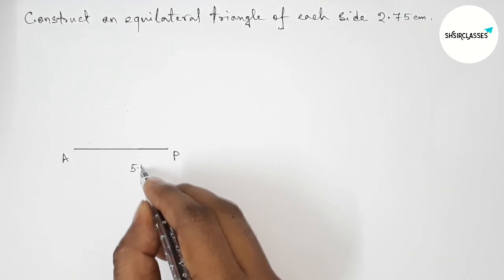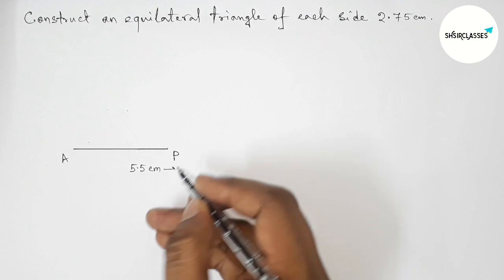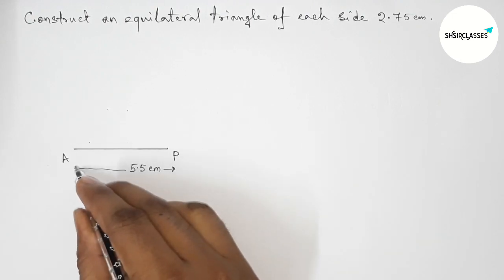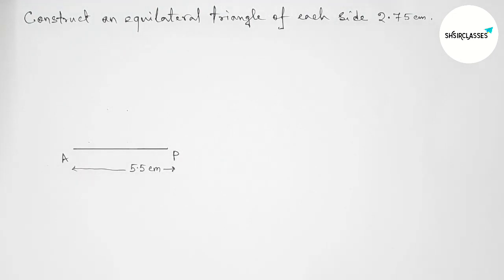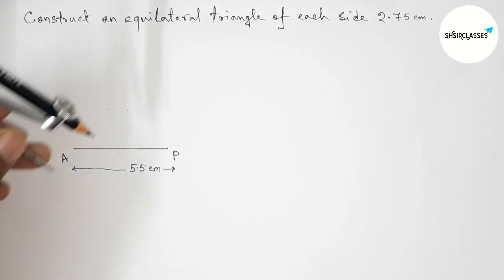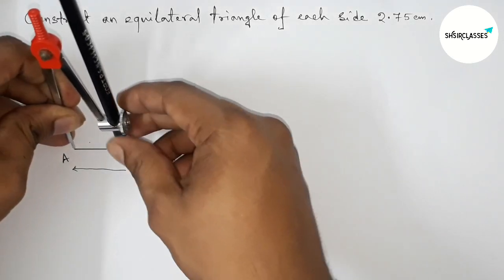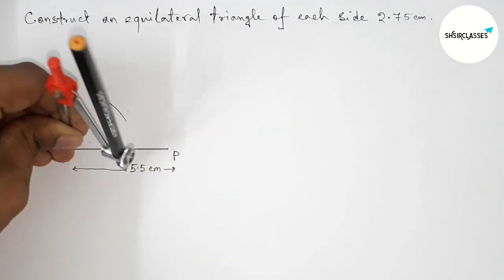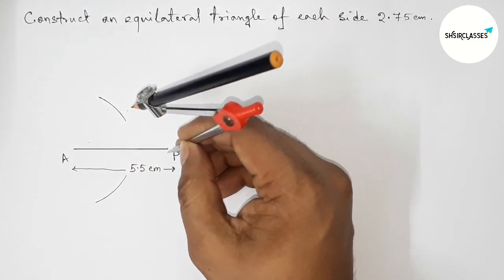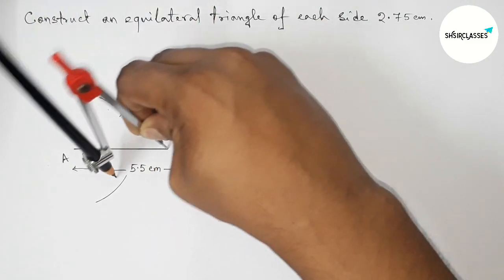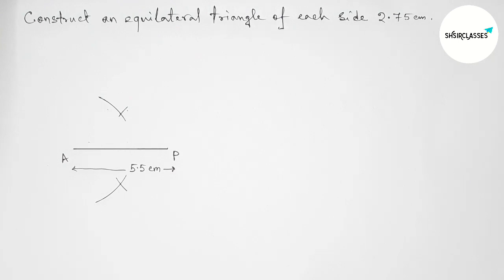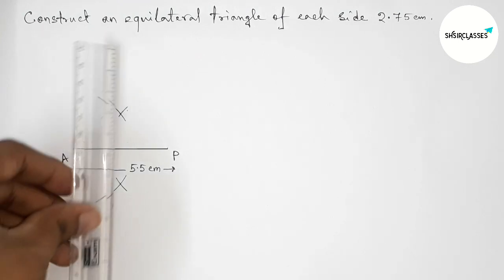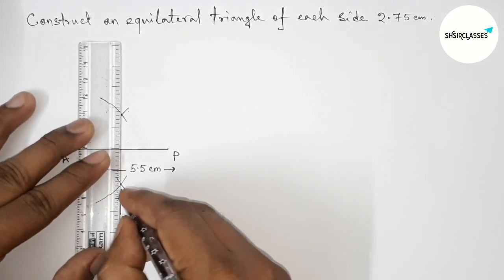Next we have to bisect the line AP. Putting the compass on point A and taking greater than half of AP, and drawing an arc. Drawing arc again with same length, putting the compass here and cut here. Now joining this line which bisects the line AP here at a point.